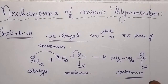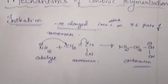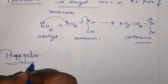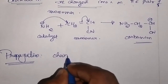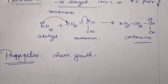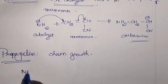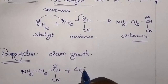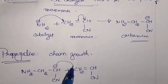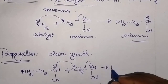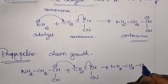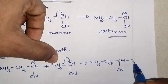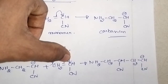Once this carbanion is generated, the next step will be the propagation step. In propagation, chain growth will take place. This carbanion NH2CH2CH2⁻CHCN will attack another monomer. It will attack this carbon, and as a result the pi electron will shift to this carbon. You get NH2CH2CH2CH(CN)— with a sigma bond forming between them — and CH(CN) with a negative charge on this carbon.